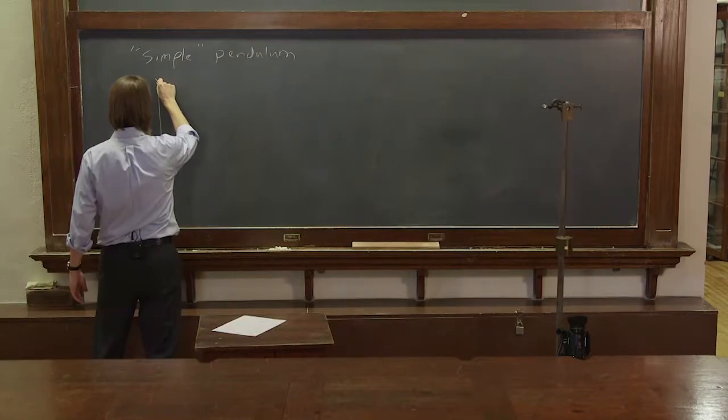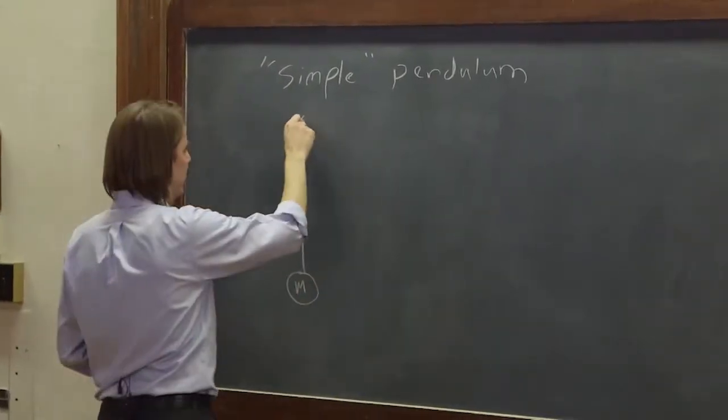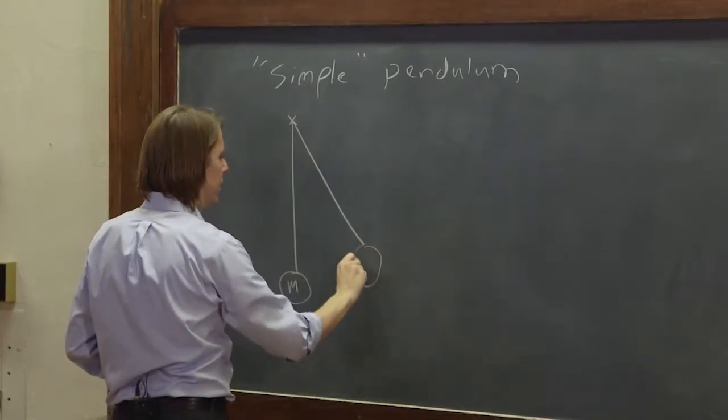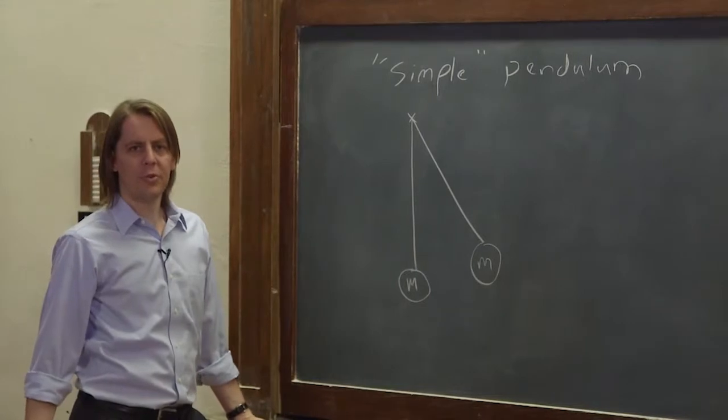Just to make sure you see all the approximations. So usually you think of the mass hanging straight down like it wants to do, but then if you perturb it, it'll hang up here somewhere. And then you can say, what are the forces on this mass?